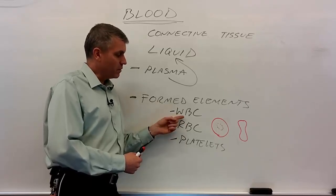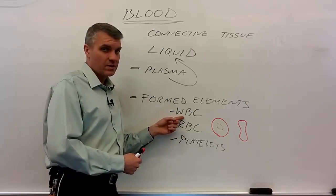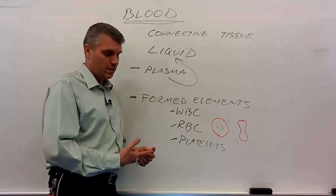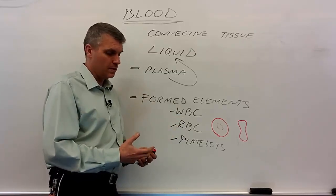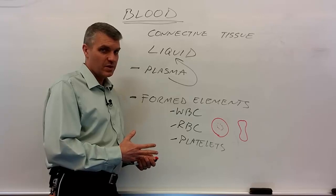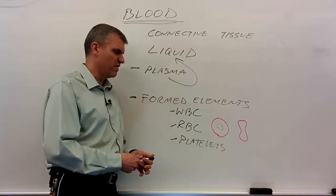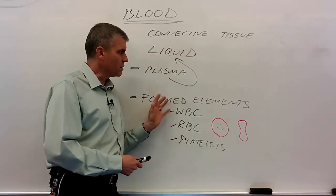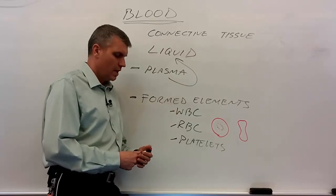We actually find more white blood cells out in the lymphatic tissue — in the lymph nodes, in the spleen, in the thymus — than we find in blood. So those are the formed elements.